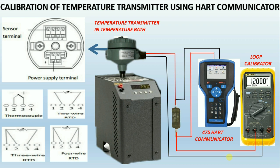After this, set the full range of the transmitter in the temperature bath and check the corresponding 20 milliamps. If it is not showing the corresponding milliamps, then adjust 20 milliamps by doing the upper sensor trim using HART.